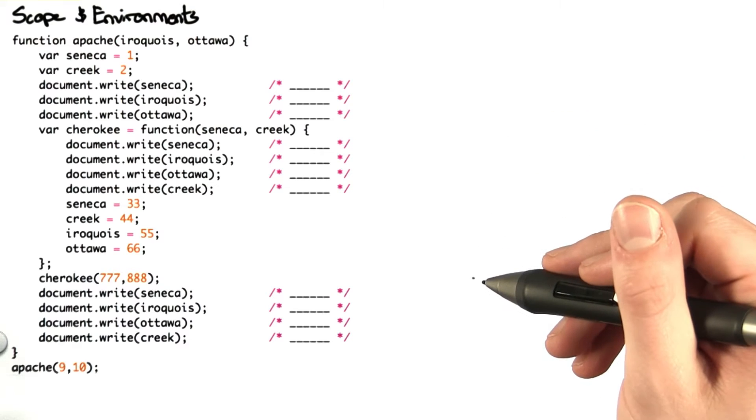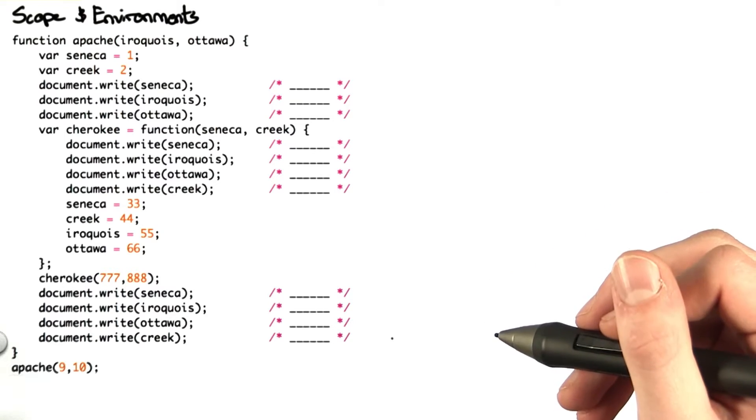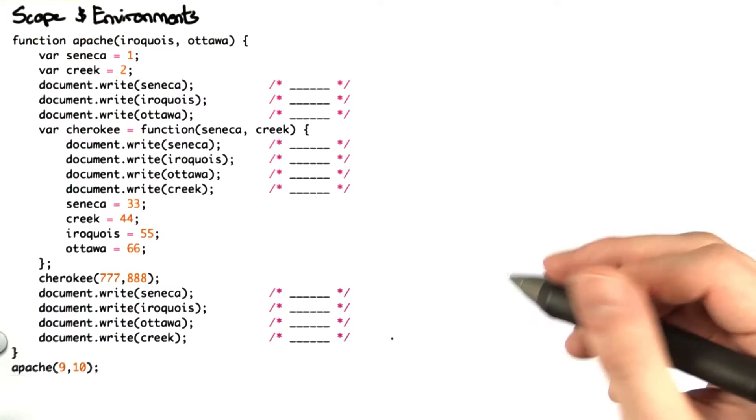Here, we test your knowledge of JavaScript environments and scope, along with a little bit of info on native North American peoples. As the text of the problem suggests, we're going to solve it by working out the nested environment diagrams.